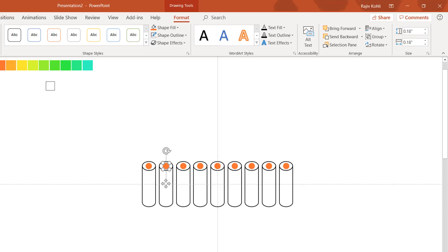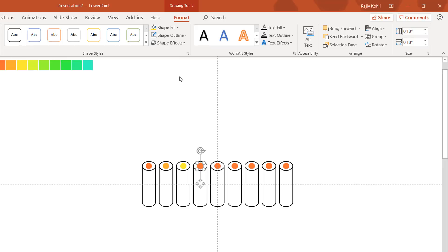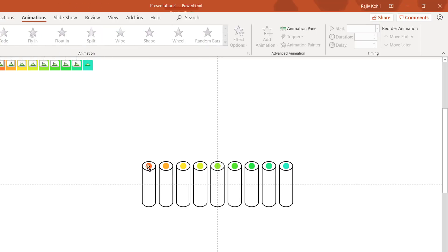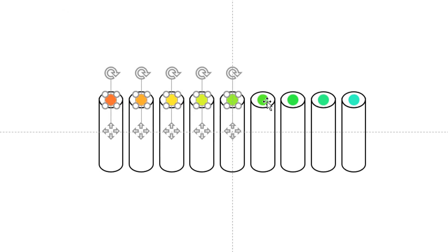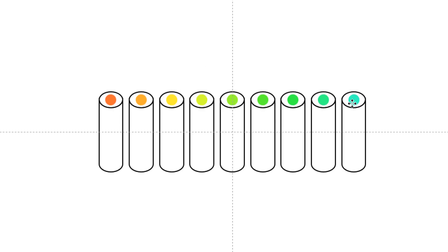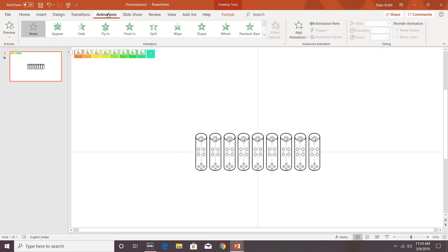Now change the fill color of all these ovals using the eyedropper from the Shape Fill drop-down button to change the color of all nine ovals. Then select all the ovals while holding Shift and drag them to the middle of the pipes.